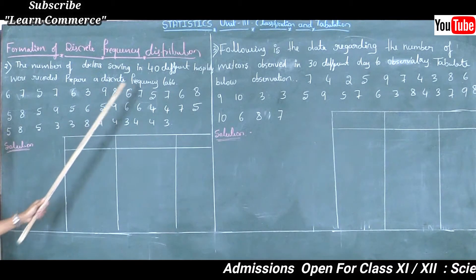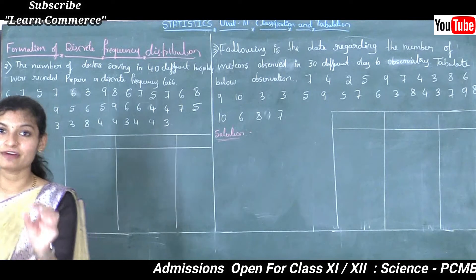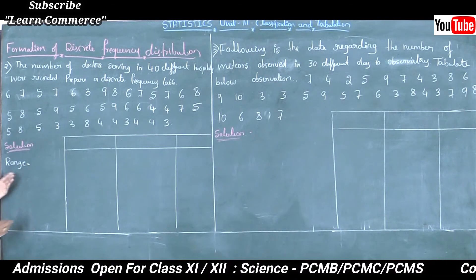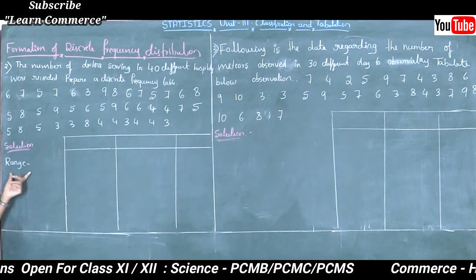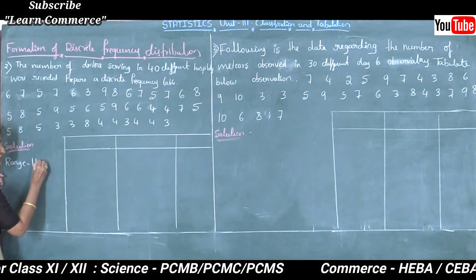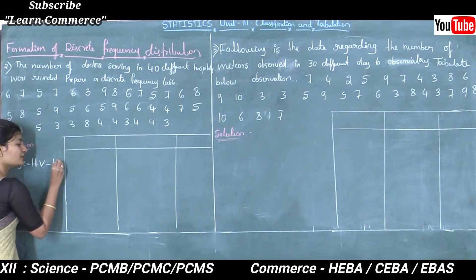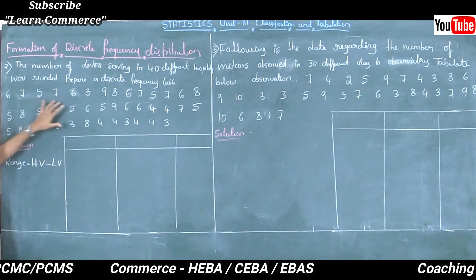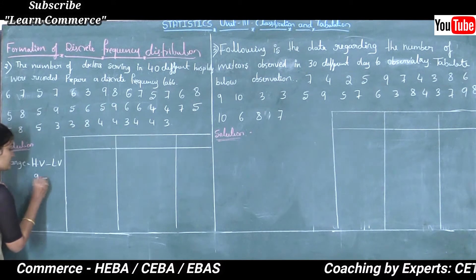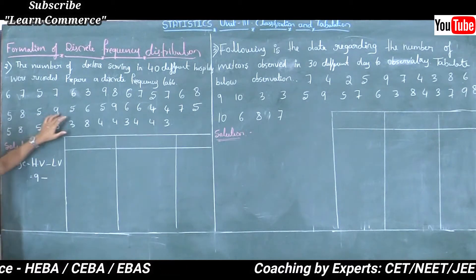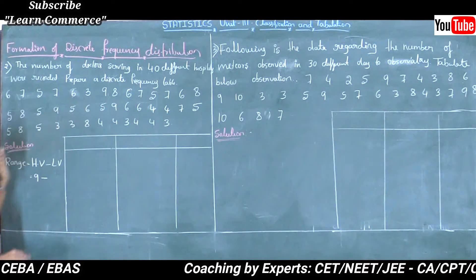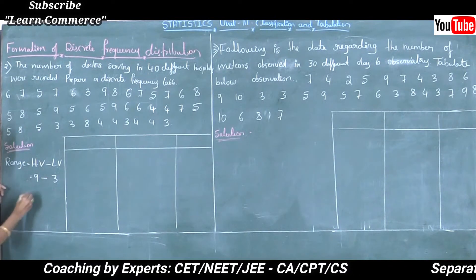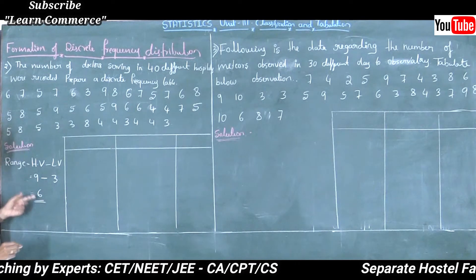I will write in the form of discrete frequency distribution. Before that, I will find the range. The range formula we discussed in the previous class: range = highest value (HV) minus lowest value (LV). In this problem, highest value is 9 and lowest value is 3. So 9 minus 3 is 6. Here range is 6.